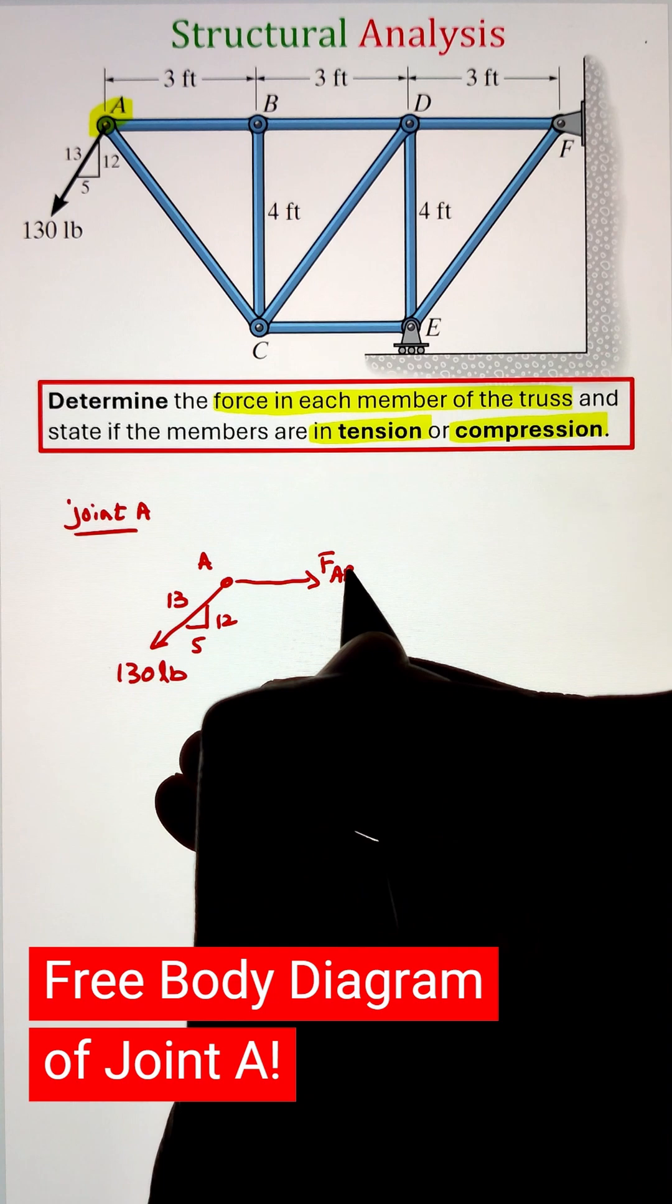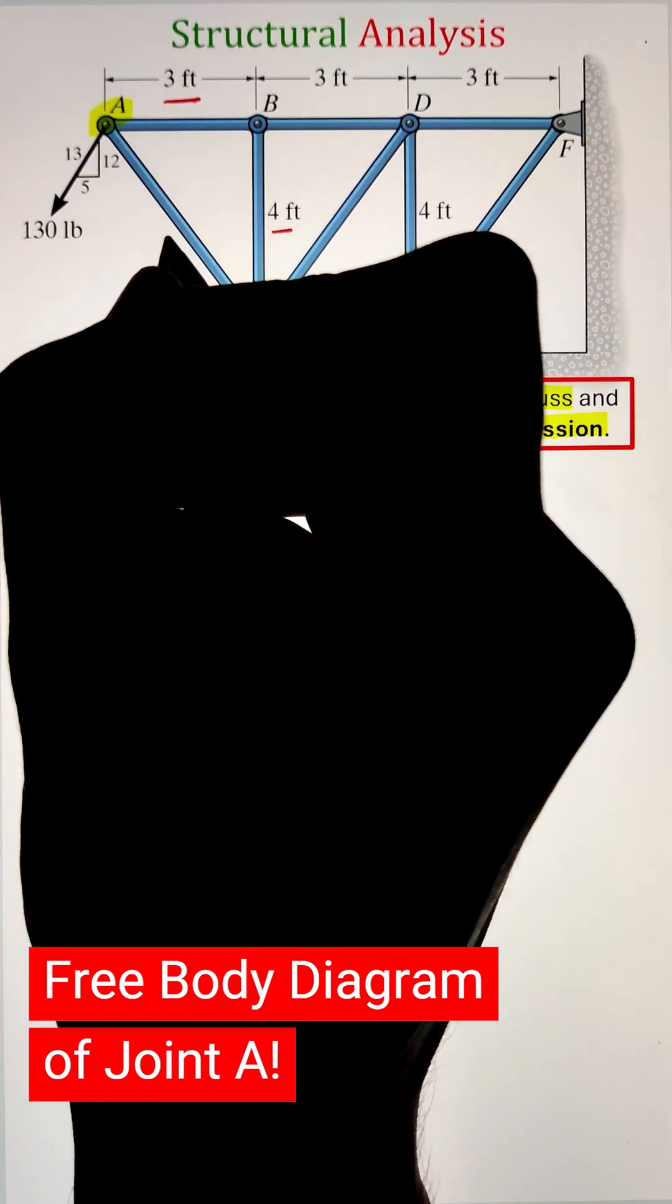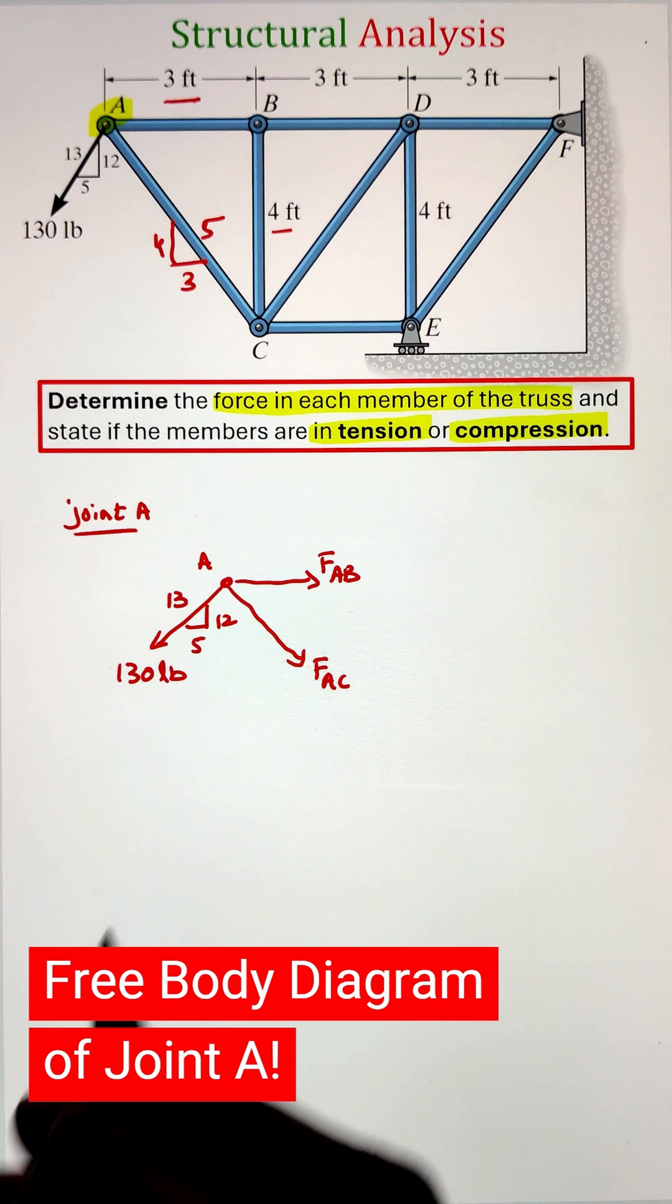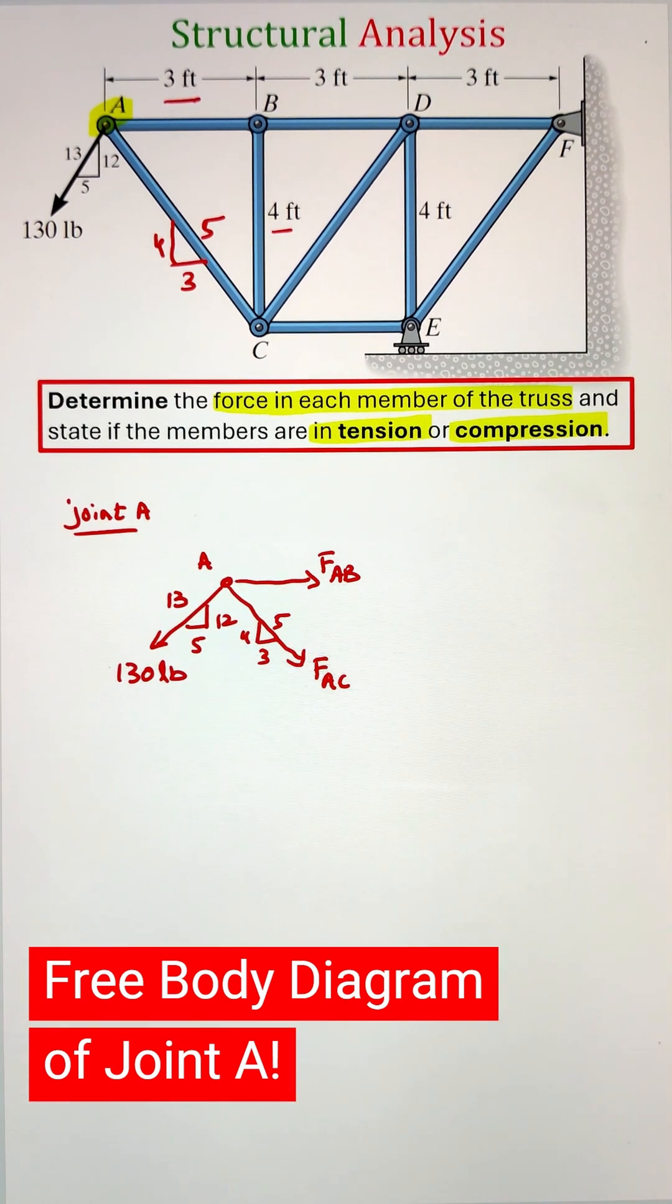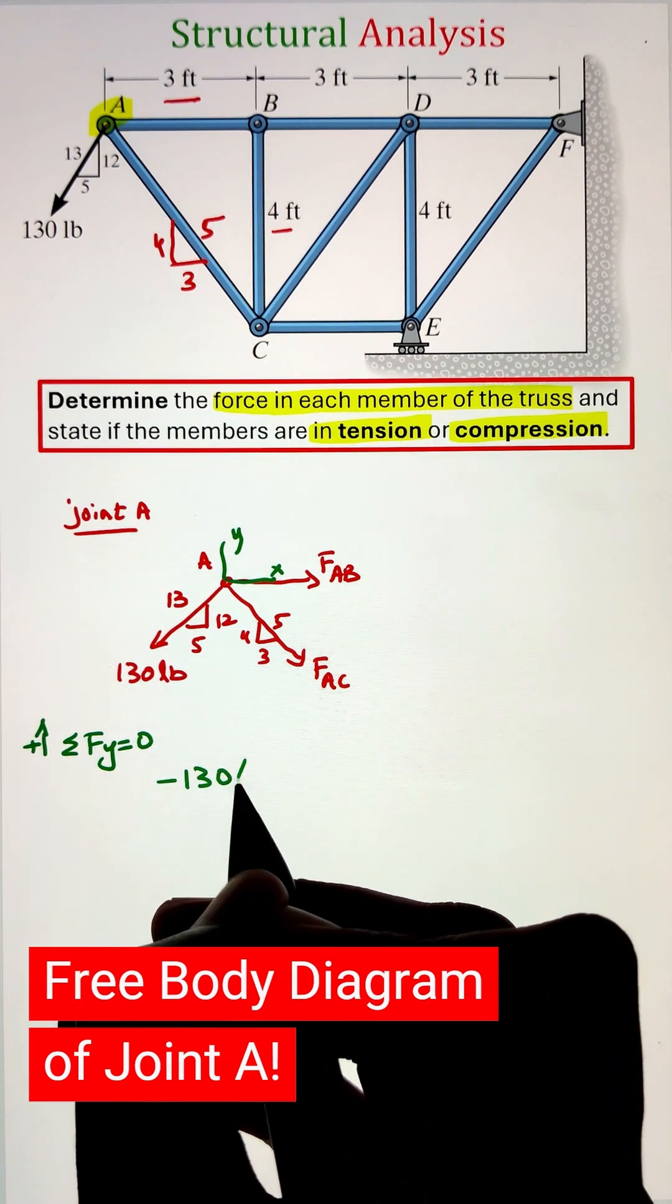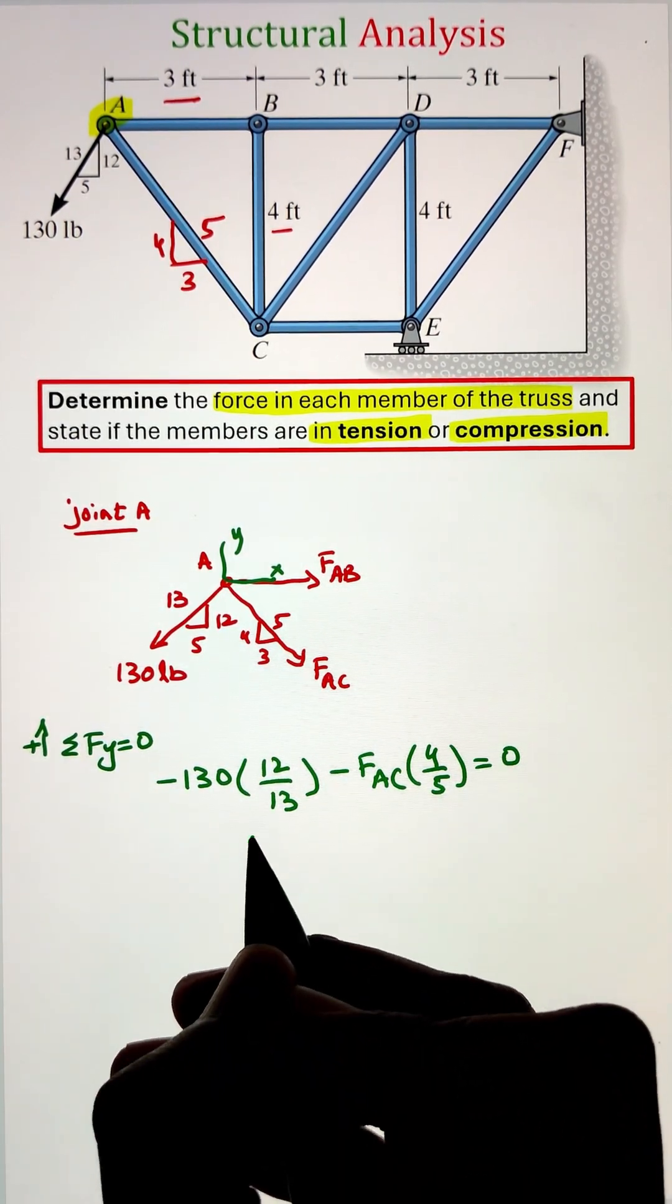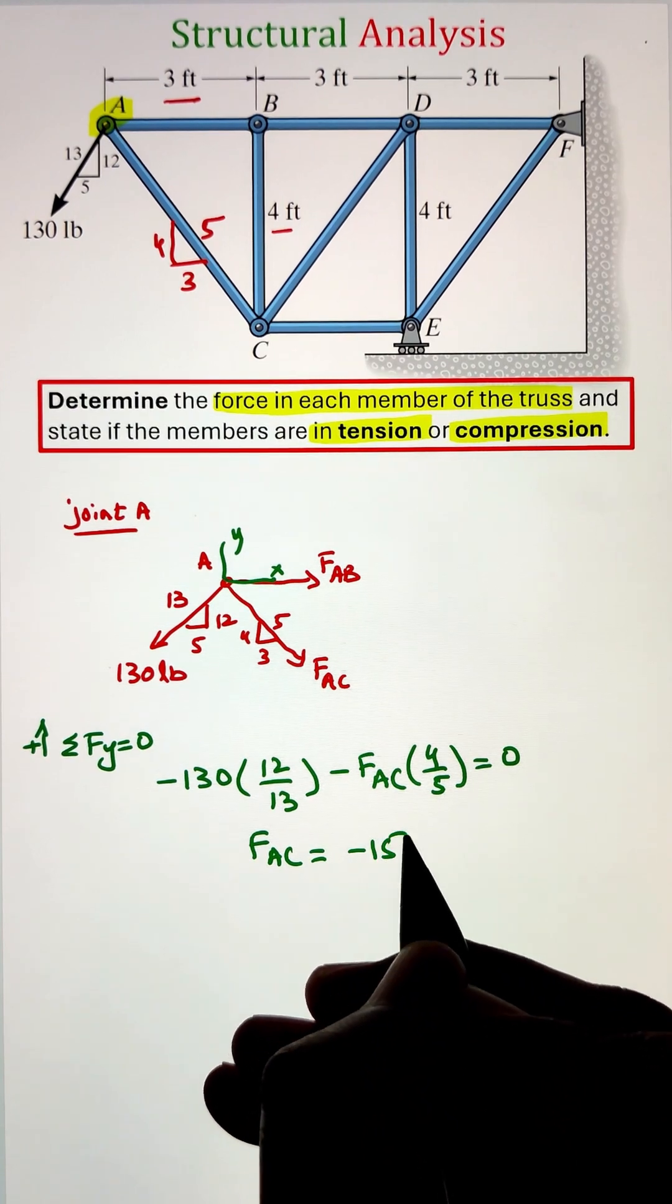To start, joint A has an external load of 130 pounds applied at an angle, and is connected to members AB and AC. On the free body diagram, I always draw the forces in the tension direction, and if we get a negative number, that means the member is in compression.